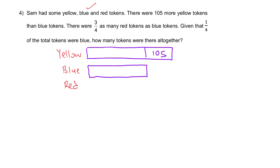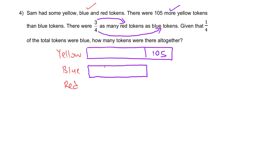There were 3/4 as many red tokens as blue. Remember: whenever a fraction is mentioned in relation to two items, the numerator belongs to the first item mentioned and the denominator belongs to the second item mentioned. So red is 3 units and blue is 4 units.